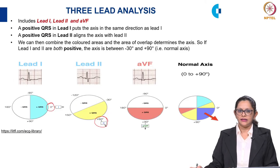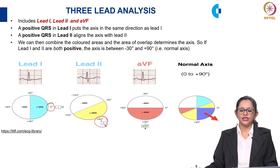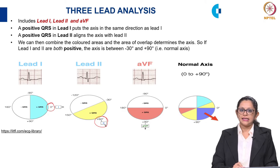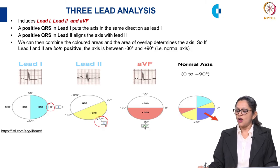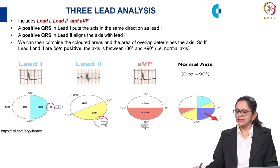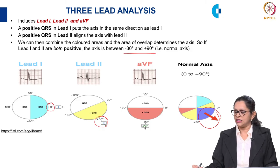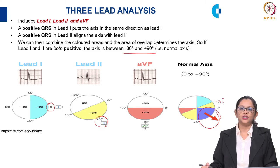The three-lead analysis method includes Lead I, Lead II, and Lead AVF. A positive QRS in Lead I puts the axis in the same direction as Lead I; a positive QRS in Lead II aligns it with Lead II at plus 60 degrees. Combining the areas of overlap: if both Lead I and Lead II are positive, the axis lies between minus 30 and plus 90 degrees, which is considered normal.